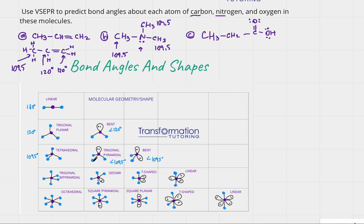This nitrogen is connected to three carbons and has one lone pair. When an atom is connected to three other atoms and has one lone pair, its shape is trigonal pyramidal and the bond angle is slightly less than 109.5°.